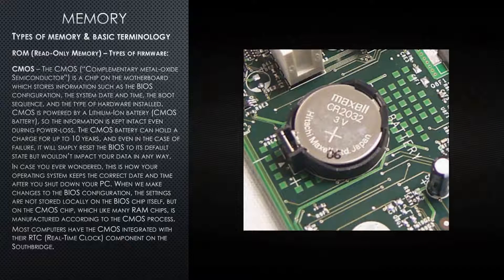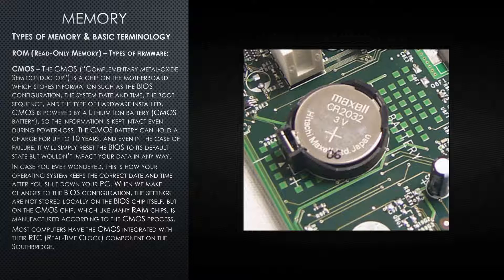The last component is the CMOS. This component is not a type of ROM, but it retains the configuration of the ROM or the BIOS, which is why it is included in this read-only memory presentation. The CMOS, or Complementary Metal Oxide Semiconductor, is a chip on the motherboard which stores information such as the BIOS configuration, the system date and time, the boot sequence, and the type of hardware installed.